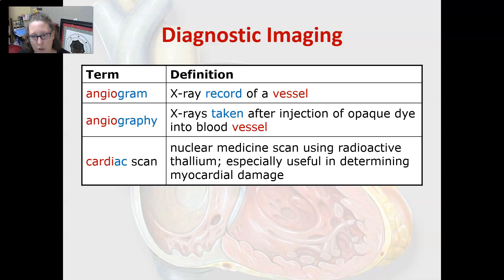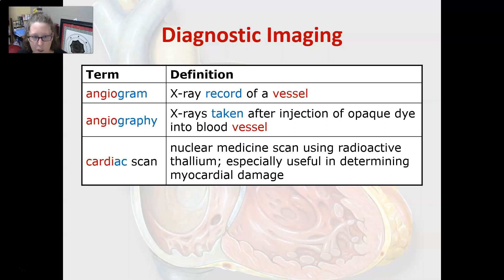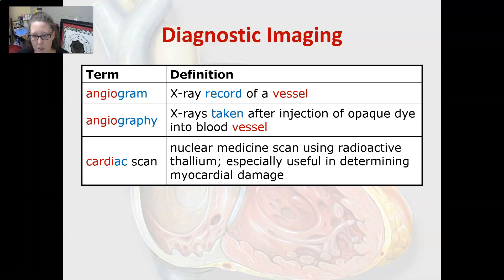Angiogram is an x-ray record of a vessel; angio means vessel. In angiography, the x-rays are taken after injection of an opaque dye into a blood vessel, so it's the process of getting an angiogram. A cardiac scan is a nuclear medicine scan that uses radioactive thallium, and it is especially useful in determining myocardial damage.